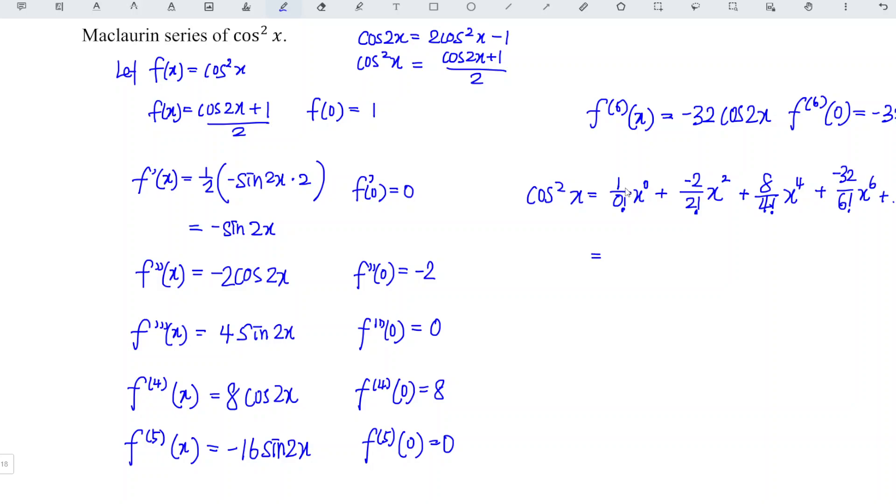Now we should simplify. So this is 1. x power 0 is 1. So negative, positive, negative. 2 over 2, 1. So x squared. Then 8 over 4 factorial is 24. So 8 over 24 is equal to 1 over 3. And then 6 factorial is equal to 720. Then negative 32 divided by 720, we should have negative 2 over 45 x to the power of 6, and so on. Then we're done.